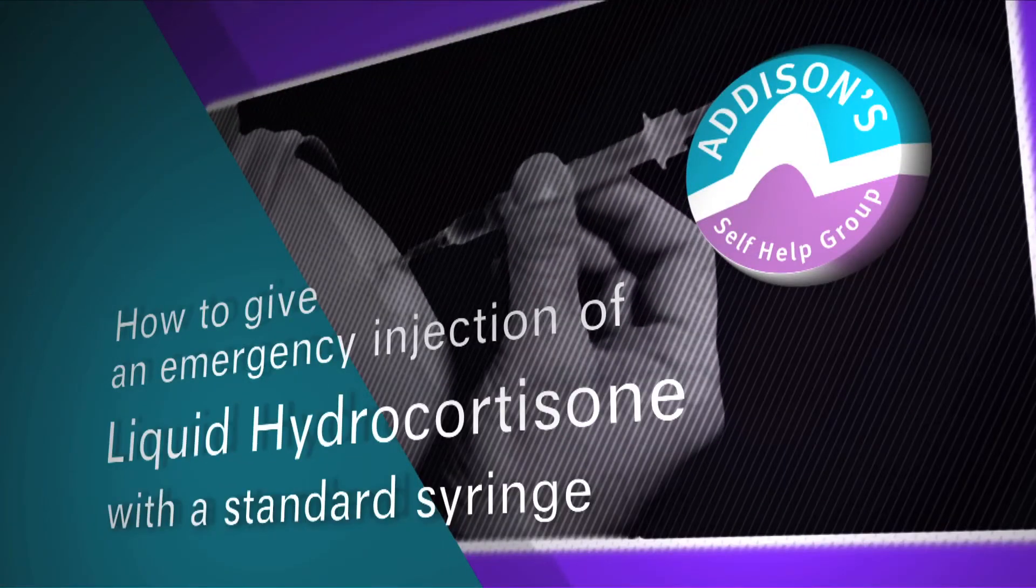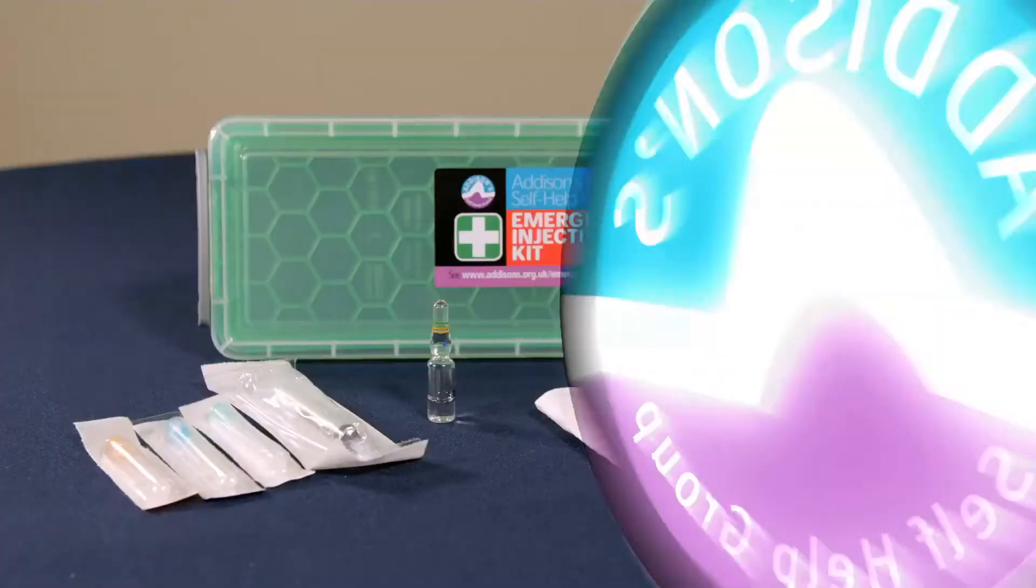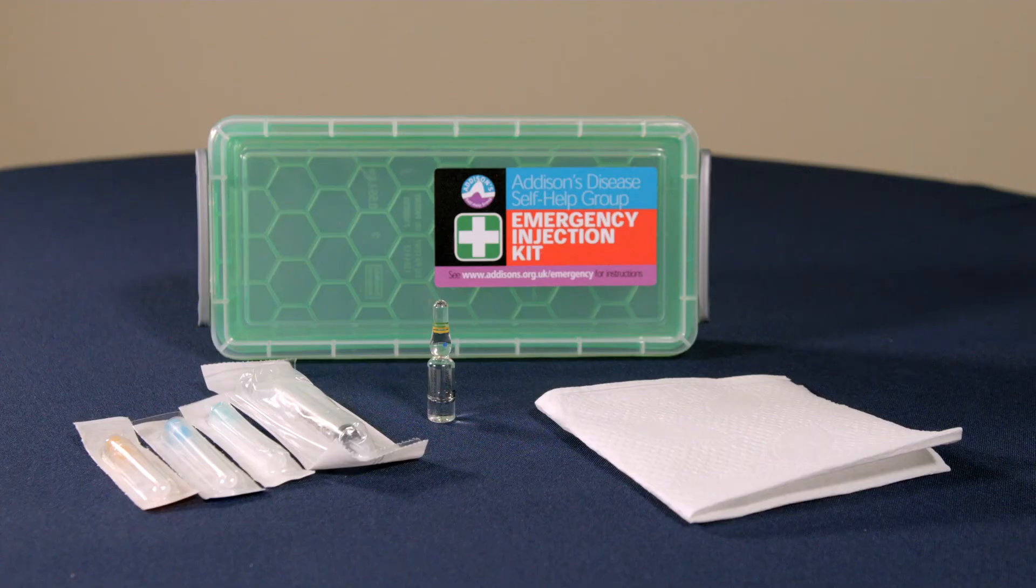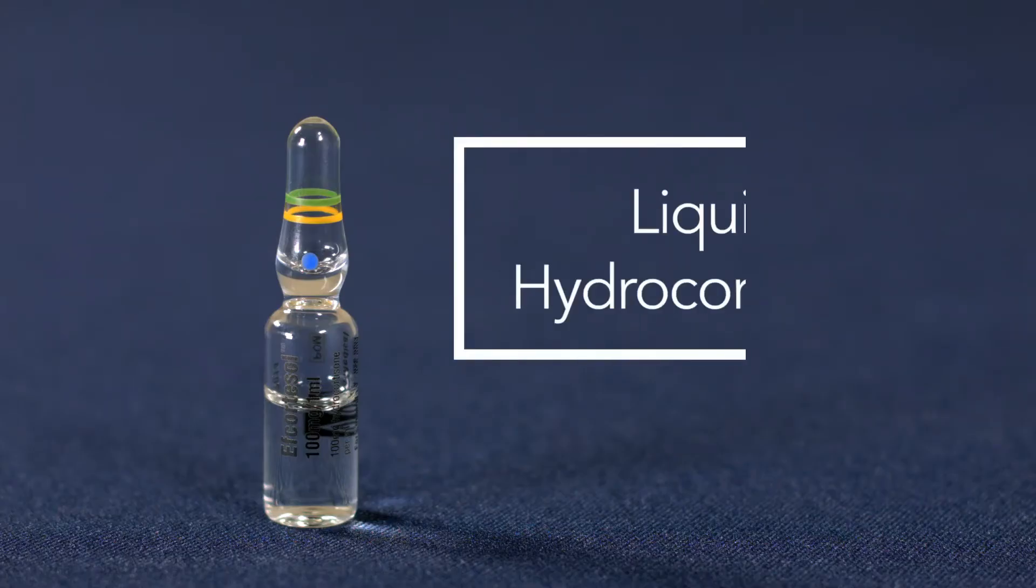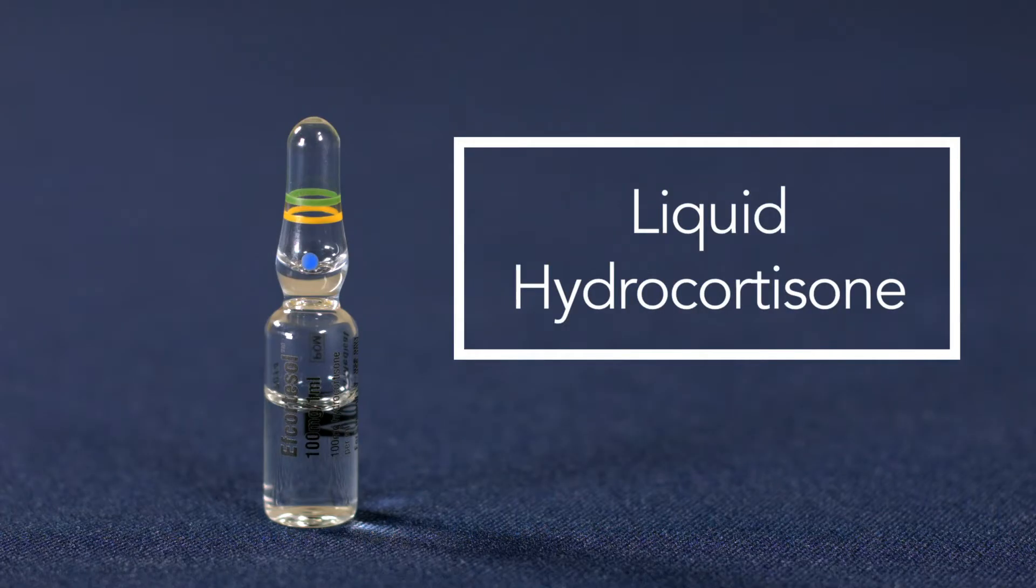This video explains how to give an emergency injection of liquid hydrocortisone using a standard syringe. You will need a glass ampule of liquid hydrocortisone containing 100 milligrams of hydrocortisone sodium phosphate.